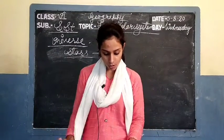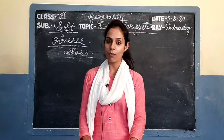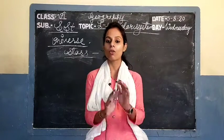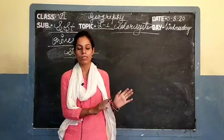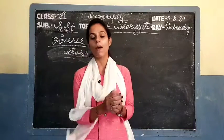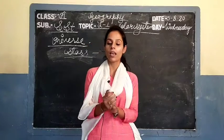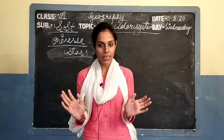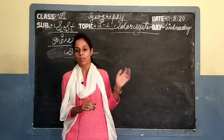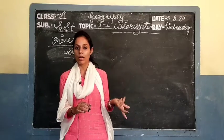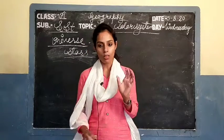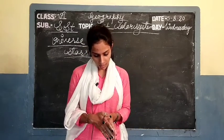Our sun is also a star. Joh humara sun hai, woh bhi ek star hai. The sun is smaller than other stars but it is much nearer to us, so it appears bigger. Sun ke compare mein woh stars bade hote hain, lekin woh humse dur hone ki wajah se woh hame bahut choti dikhai deti hain.